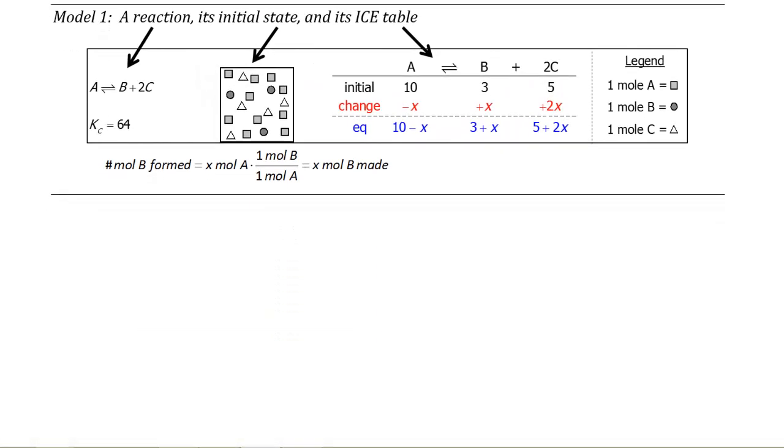Here's our Model 1. We're given the reaction, the equilibrium constant, and the initial state of the system. Over to the right, I've created an ICE table. But the question is, how do we come up with this? What does everything mean?